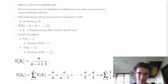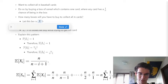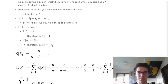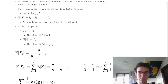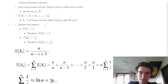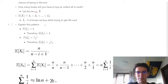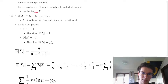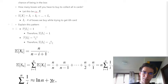We let x be our random variable and represent E[X] as a sum of indicator variables, where I_i is the number of boxes we need to buy to get the ith card — the card we still need. So I_1 asks how many boxes until the first card, I_2 asks how many boxes until the second new card, and so on.